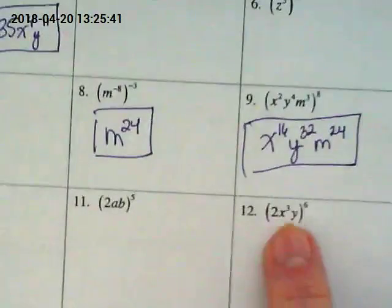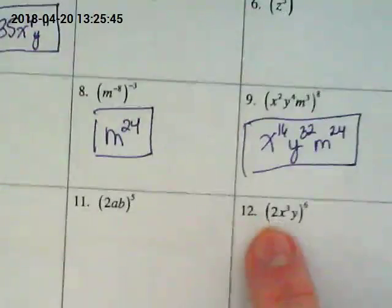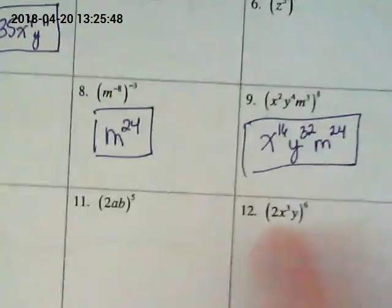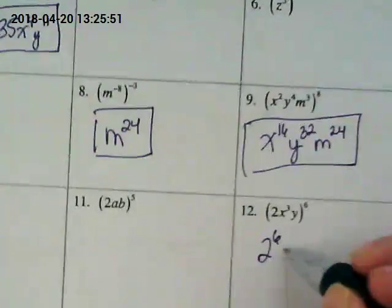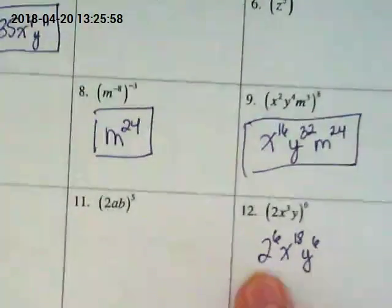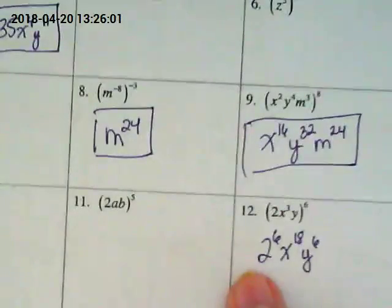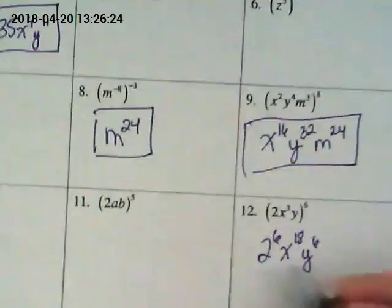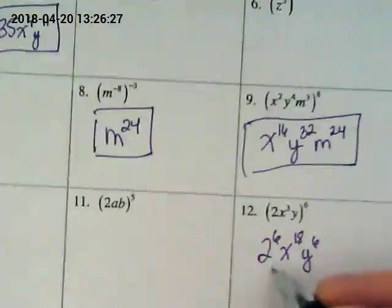A little bit tricky with ones like problem 12. That exponent has to go to the 2 also. So this is 2^6 times X^18 times Y^6. But that's not finished. You'd have to find what 2^6 is. Yeah, it's big. Because 2^3 is 8, 2^4 is 16. It's not huge, but it's like 64. This isn't finished until that's done. So be careful of those, okay?